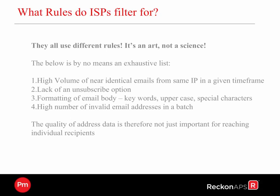What rules do ISPs filter for? They are all different, and it's an art, not a science unfortunately. The below is by no means an exhaustive list. We're talking high volume of near identical emails from the same IP in a given timeframe — typically when ISPs say high volume, they're talking thousands, whereas in the case of your bulk email invoices we may be talking a few hundred. The lack of an unsubscribe option in the body of the email will identify and red flag to ISPs. Formatting the email body — there will be certain keywords, uppercase and special characters. ISPs are always good at reviewing your email bodies to help guide you in best practice. The high number of invalid email addresses in a batch is also important, so ensuring that you've done your database cleanse is critical. The quality of the address information is also important for when it's reaching the individual recipients.